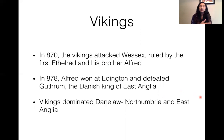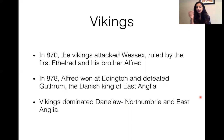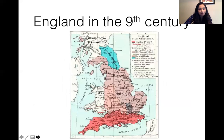In 870, the Vikings attacked Wessex, which was ruled by Ethelred and his brother Alfred. In 878, Alfred won at Edington and defeated Guthrum, the Danish king of East Anglia. The Vikings then dominated the Danelaw, that is Northumbria and East Anglia. Here is a map of England in the ninth century showing the Kingdom of Wessex, Mercia, Northumbria, and the Danelaw.